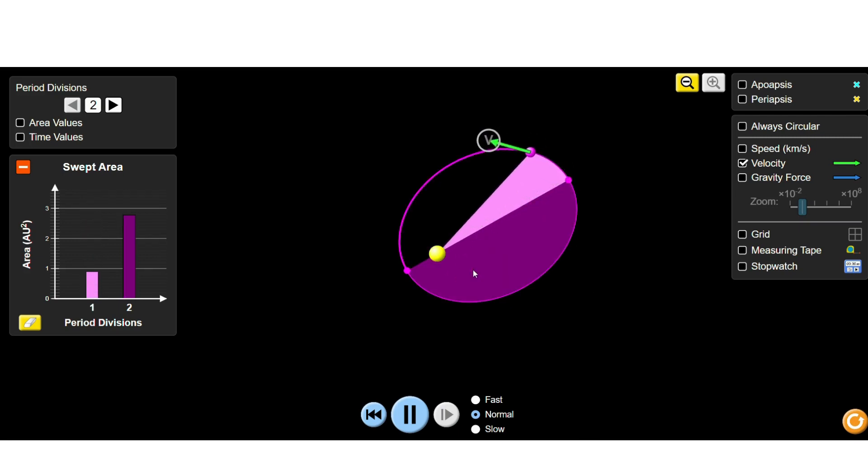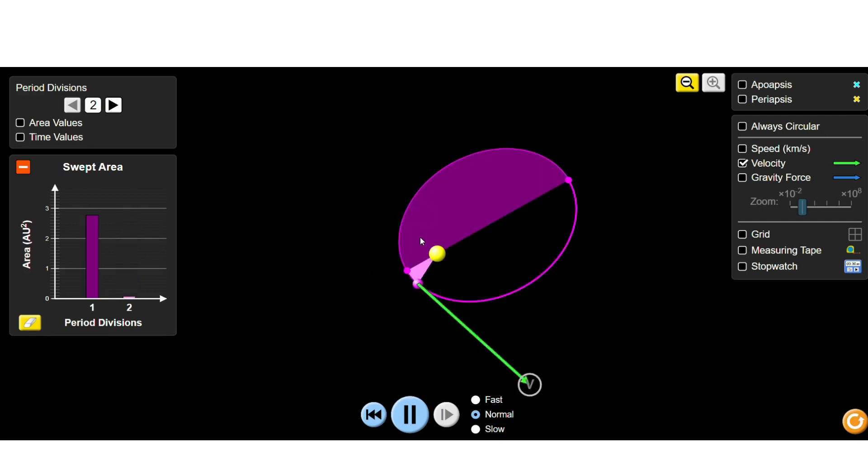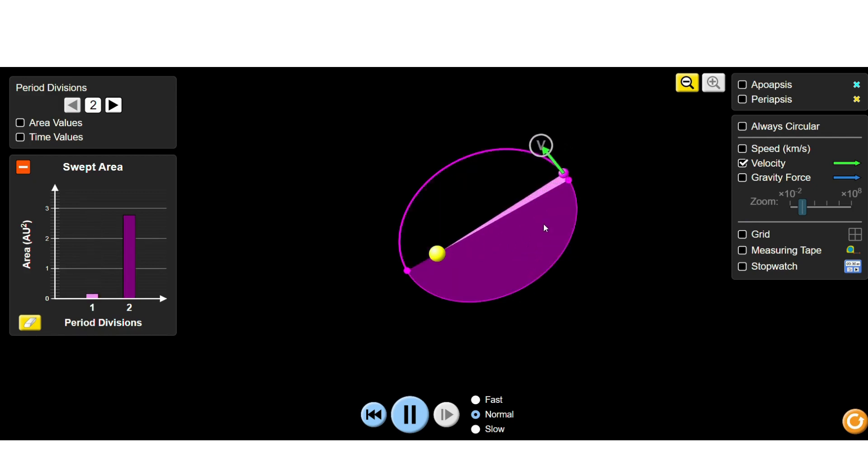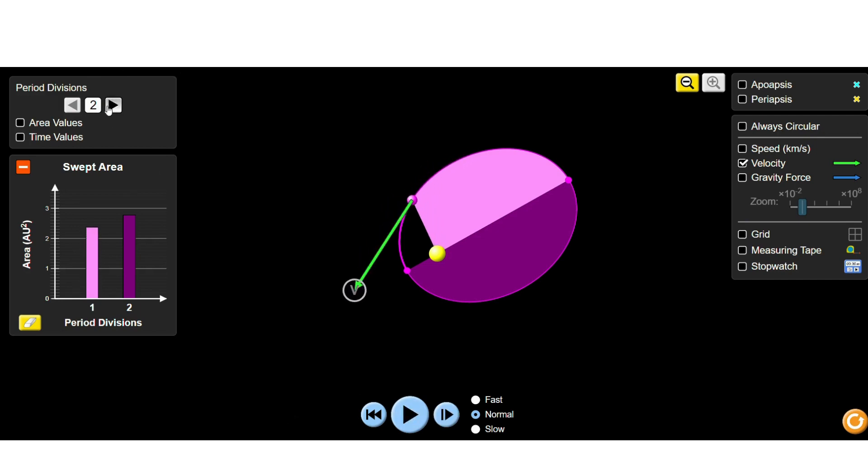Here, the planet orbits around the star in its orbital plane. I've divided this orbital plane into sections - let me adjust it to four parts.